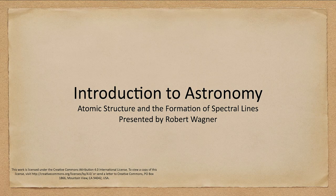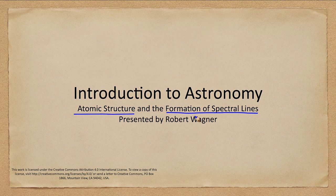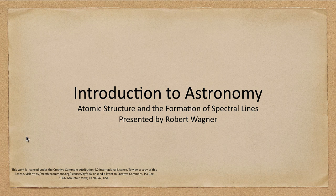Greetings and welcome to the introduction to astronomy. In this lecture we are going to talk about the structure of the atom and how spectral lines are formed. Now we did look at spectral lines last time and now we're going to see actually how those are formed.